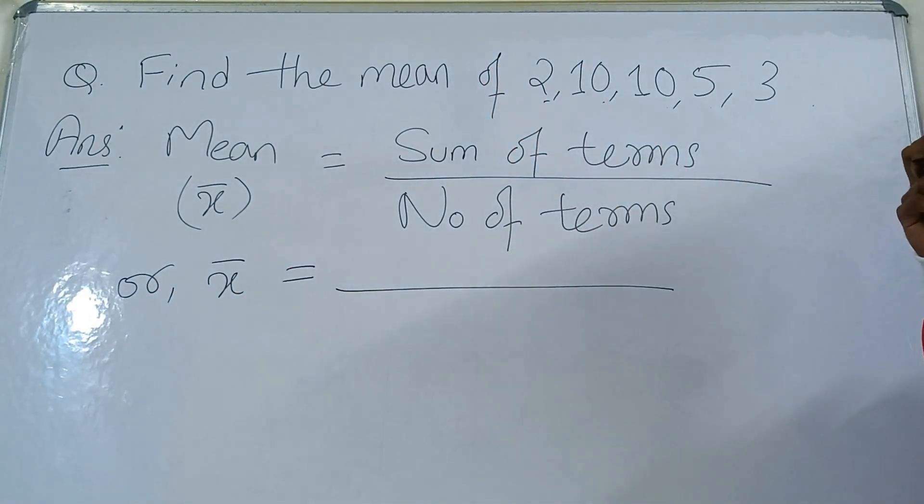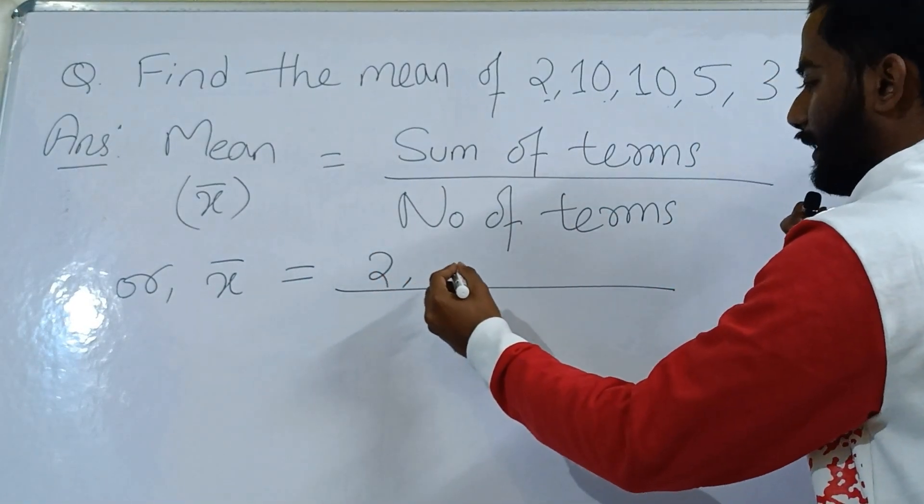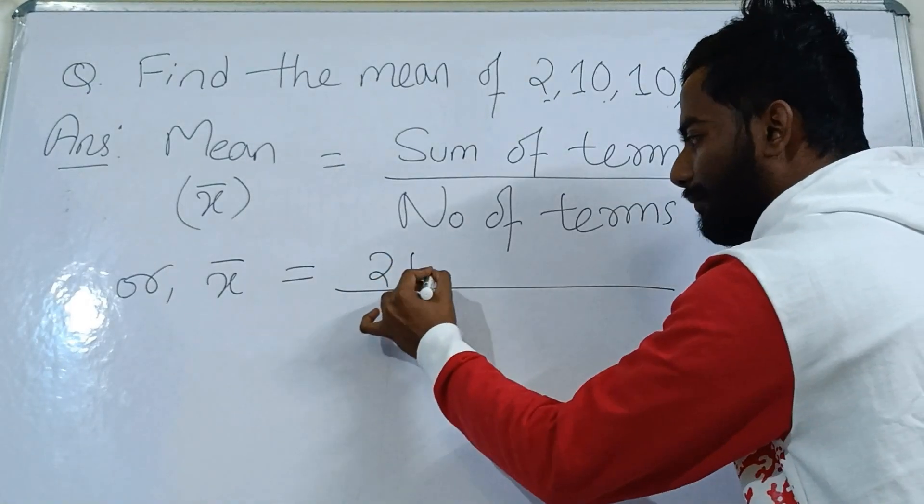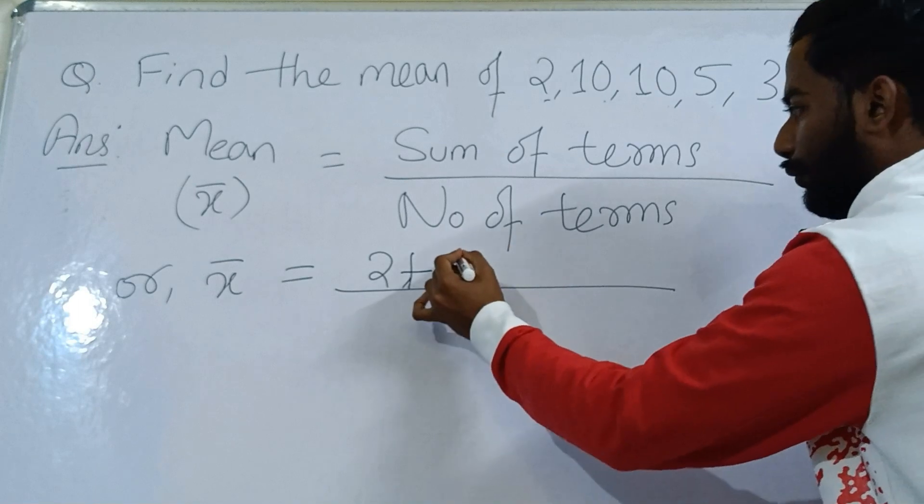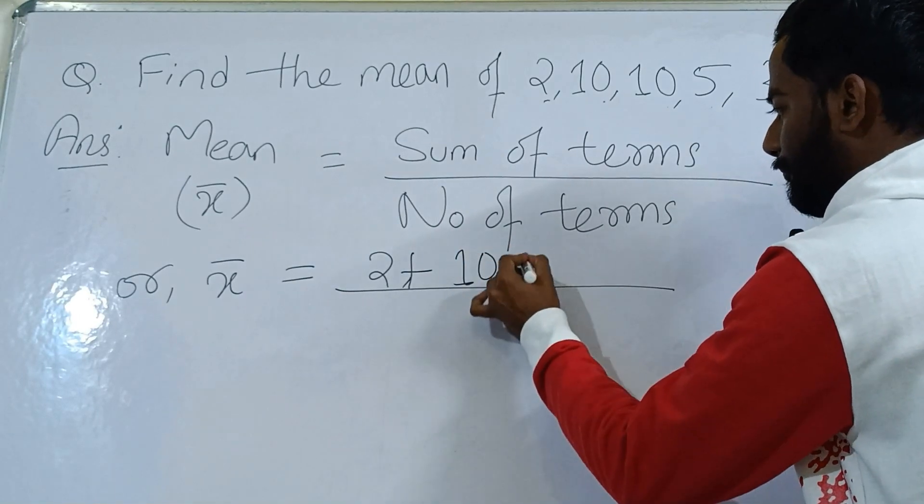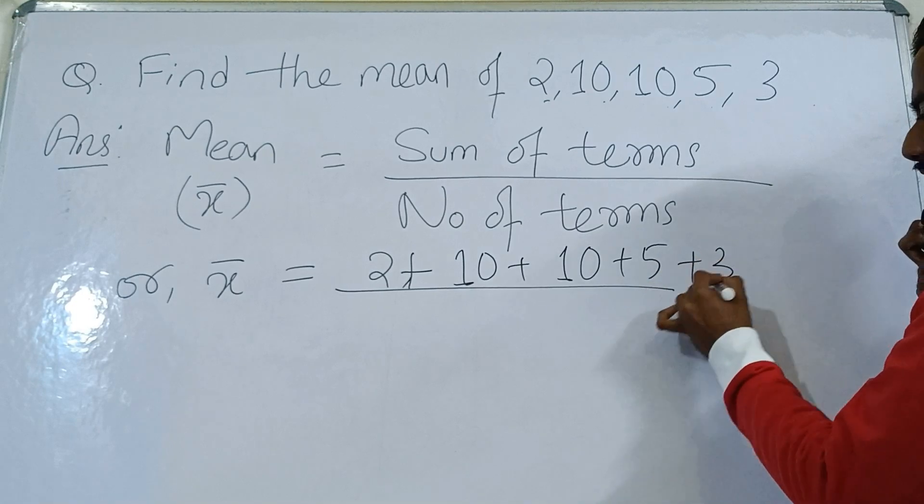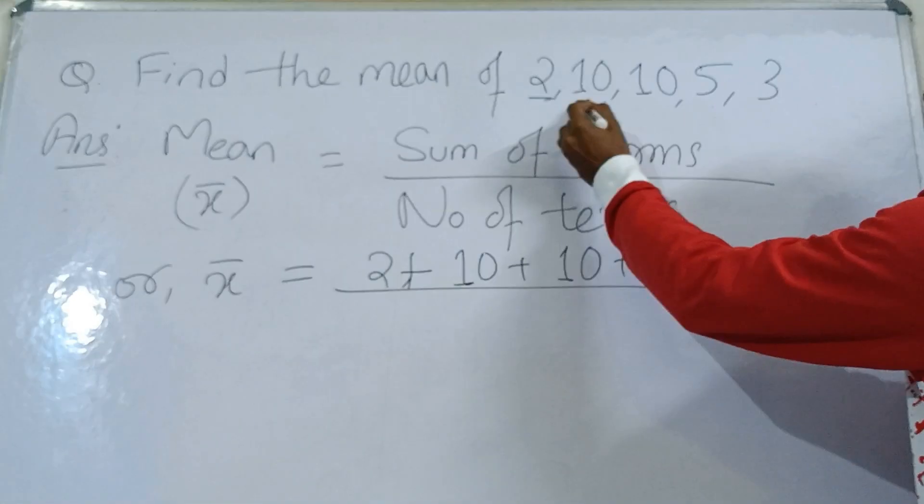We have the terms: 2 plus 10 plus 10 plus 5 plus 3. We will add plus sign after each number. So 2 plus 10 plus 10 plus 5 plus 3. Now you will see how many terms? 1, 2, 3, 4, 5, so divided by 5.